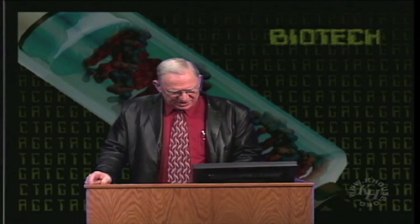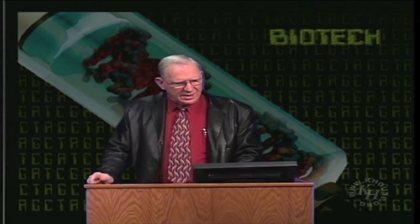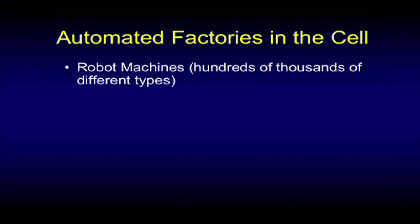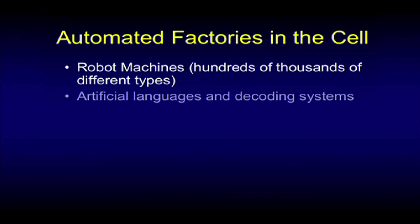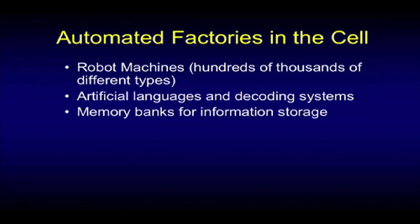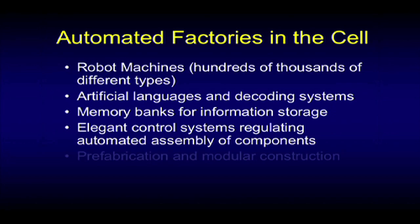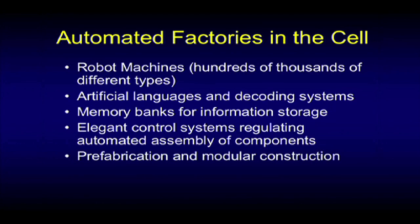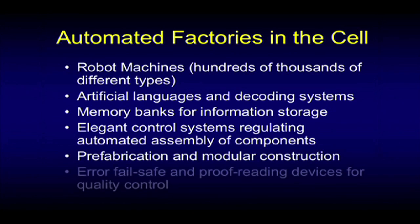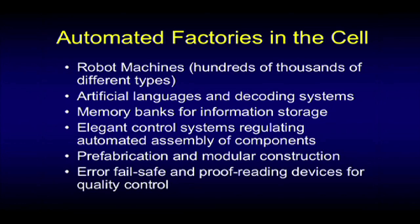This is literally a miniature city. There are automated factories in the cell — robot machines, hundreds of thousands of different types — that have an artificial language and decoding systems, memory banks for information storage, elegant control systems for automated assembly of components. They prefab and use modular construction. They have error fail-safe and proofreading devices for quality control.